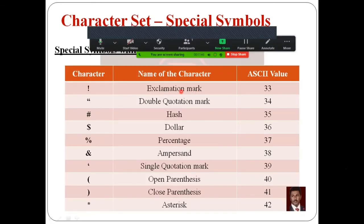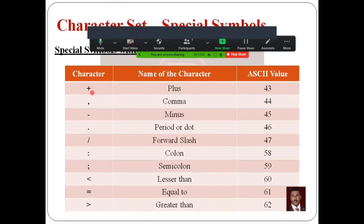These are the special symbols and their ASCII values. Exclamation mark: ASCII value 33. Double quotation: ASCII value 34. Hash symbol: ASCII value 35. Dollar symbol: ASCII value 36. Percentage symbol: ASCII value 37. Ampersand symbol: ASCII value 38. Single quotation mark: ASCII value 39. Open parenthesis: ASCII value 40. Close parenthesis: ASCII value 41. Asterisk: ASCII value 42. Plus: ASCII value 43. Comma: ASCII value 44. Minus: ASCII value 45. Dot or period: ASCII value 46.